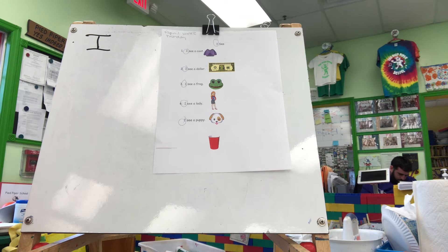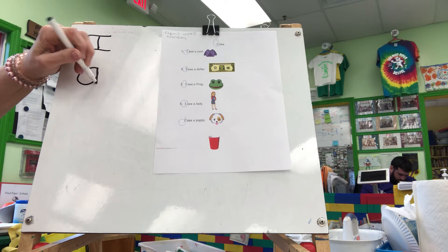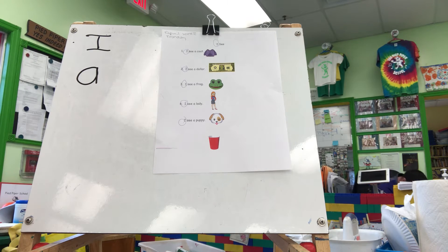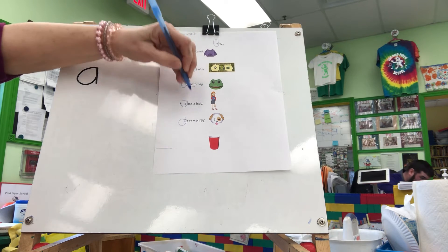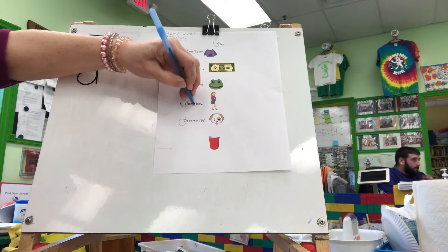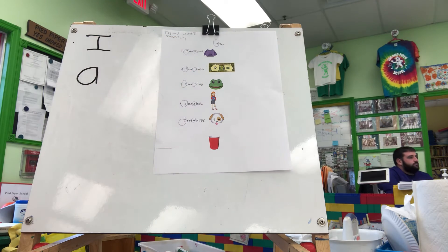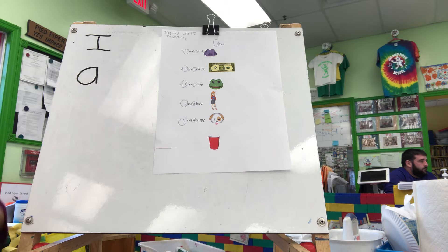Does anyone see another letter word? Do you see the A? I do too. Take your pencil and put a ring around the letter and the word A. Those are two of the first letter words that we learned: I and A. Take your time. Put me on pause and then come back.